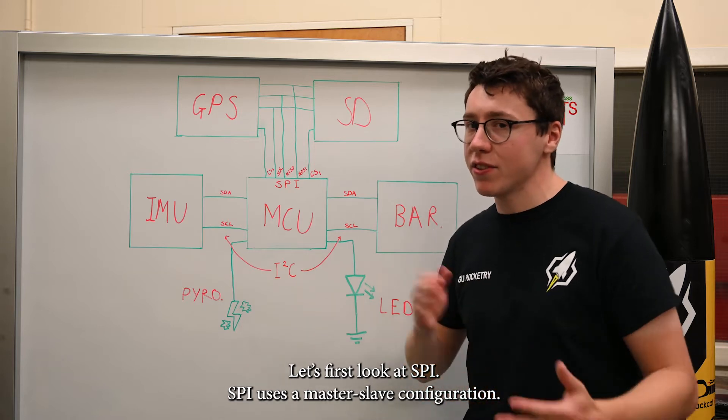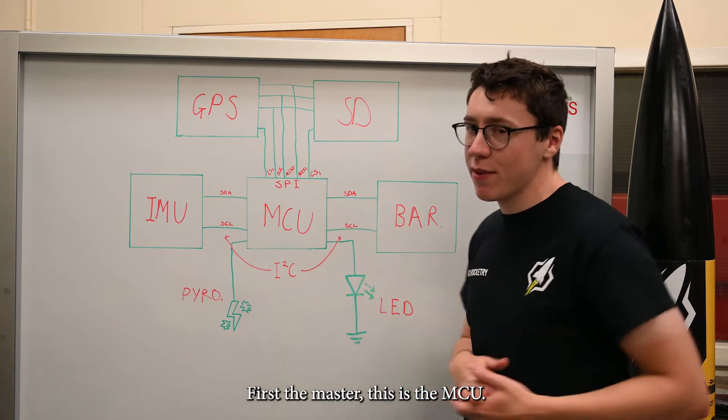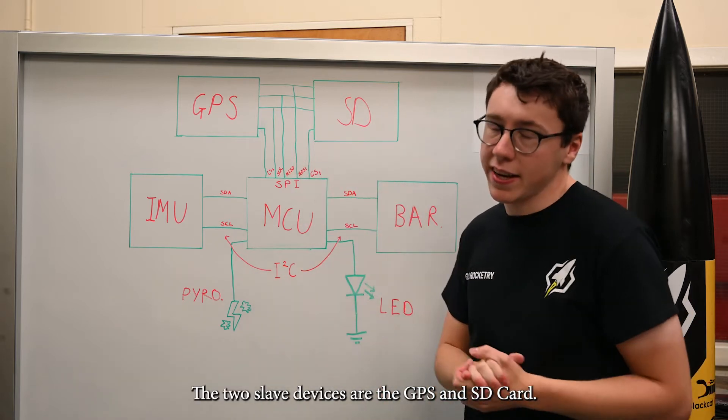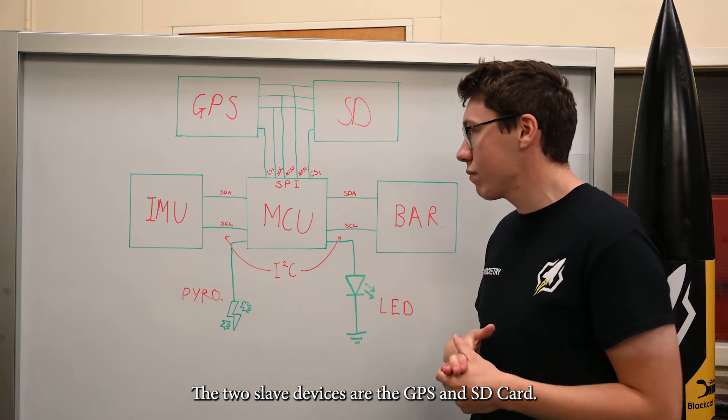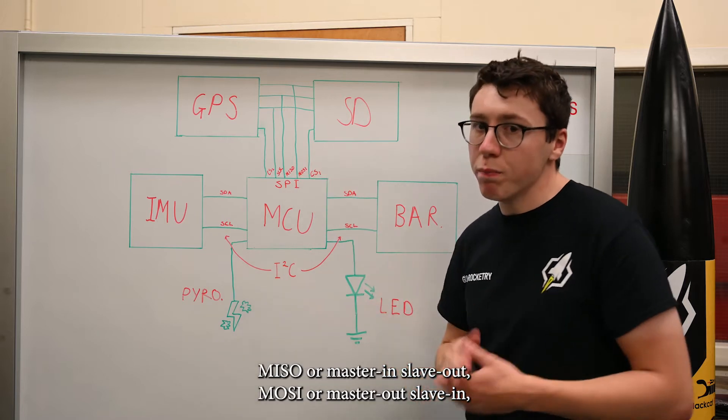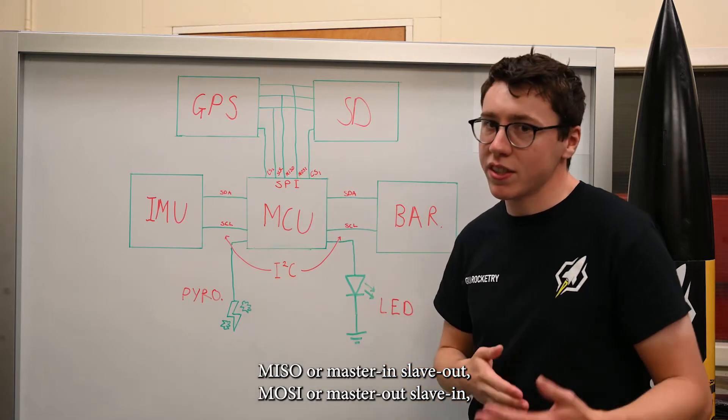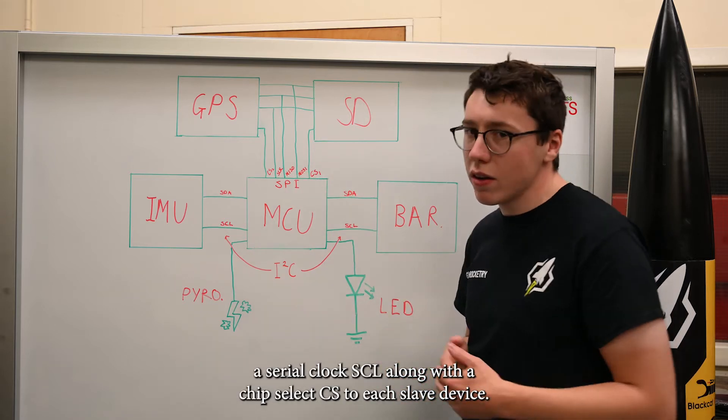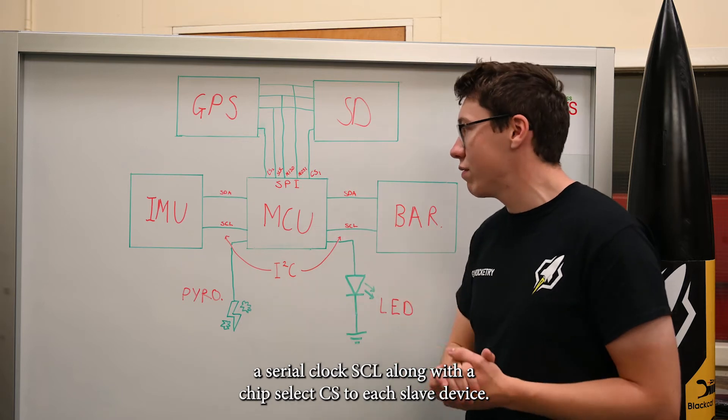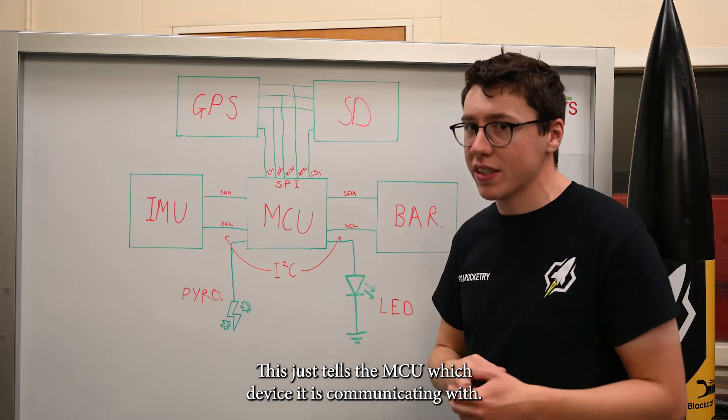SPI uses a master-slave integration. First, the master, this is the MCU. And the two slaves are the GPS and the SD card. There are three main connections going to each device: the MISO, master in, slave out; MOSI, master out, slave in; a serial clock; and also, a chip select to each slave. This just tells the microcontroller which device it's communicating with.